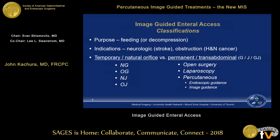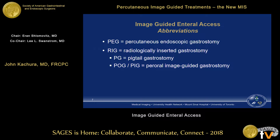I like to think of things as simply as possible. You could divide your enteral access routes into temporary or natural orifice versus permanent or trans-abdominal. In the old days, G-tubes were done via open surgery or laparoscopy, but now they're largely percutaneous. Percutaneous in this instance doesn't necessarily mean just image guidance — this could be endoscopic, for example PEG tubes, or using imaging guidance.